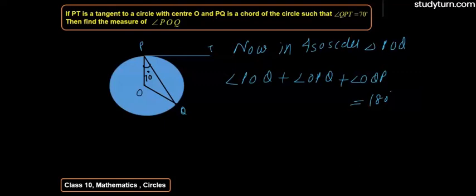The sum of the three angles is 180 degrees, so we can write angle POQ is equal to 180 degrees minus 20 degrees minus 20 degrees. This is equal to 140 degrees.